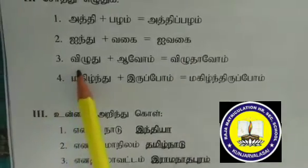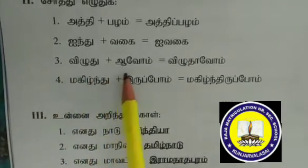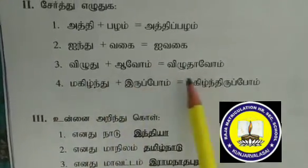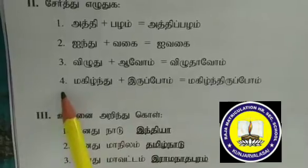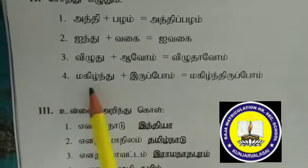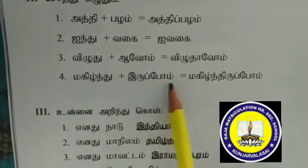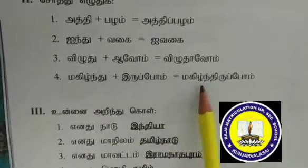Third one: Villudhu plus A, O — Villu tha O. Fourth one: Mahindu plus Eruppoh — Mahindu.